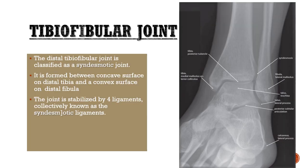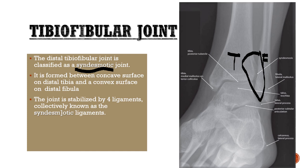The distal tibiofibular joint is classified as a syndesmotic joint, meaning it doesn't have much movement. It is formed between the concave surface of the distal tibia and the convex surface of the distal fibula, and is stabilized by four ligaments collectively known as the syndesmotic ligaments.